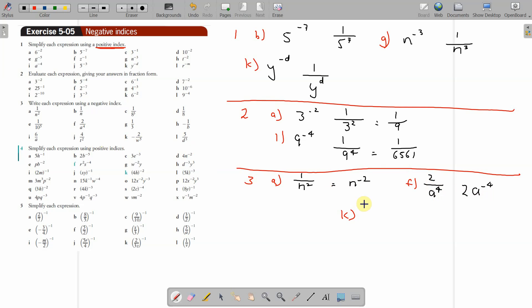Now be careful with those ones. Part k: minus 2 over w to the power of 5. I will deal with this one first. It's w to the power of negative 5, and minus 2 times that. That's question 3.